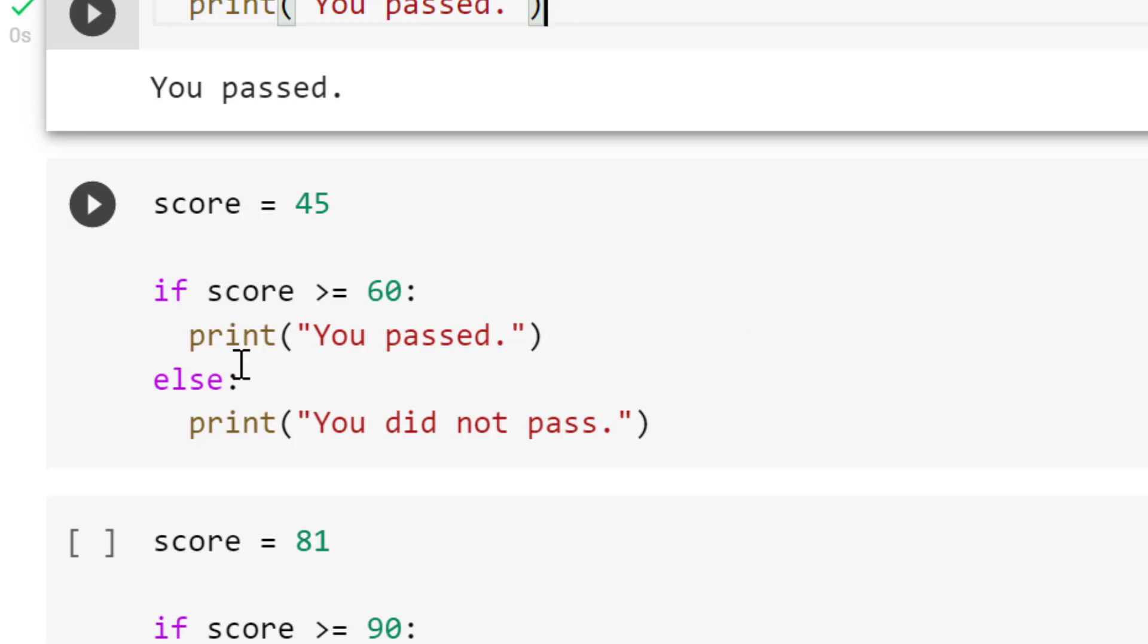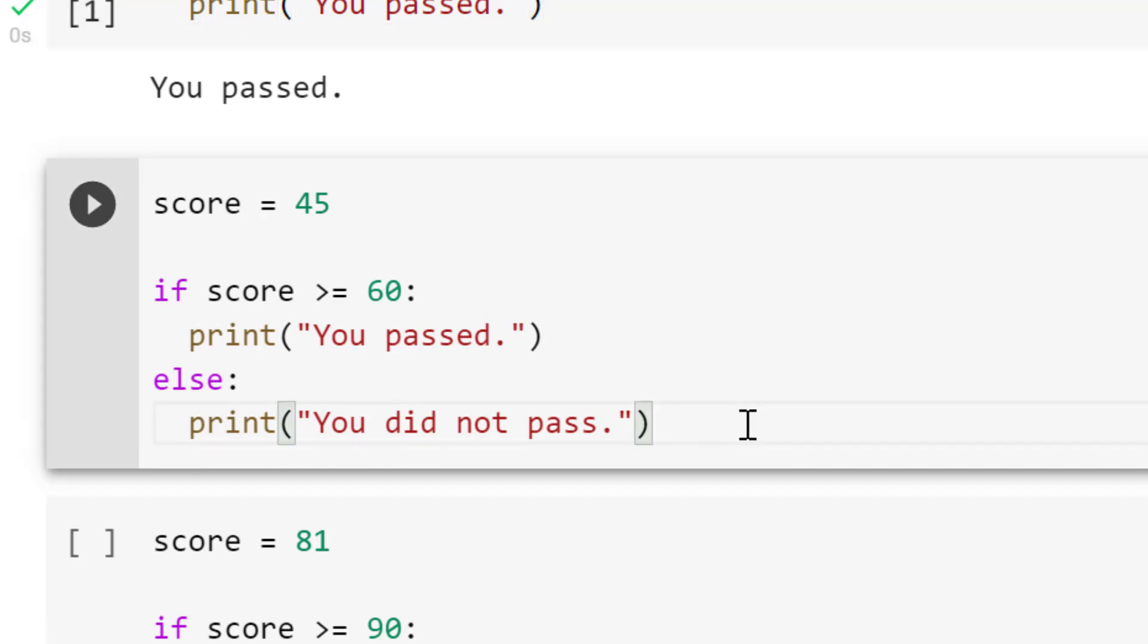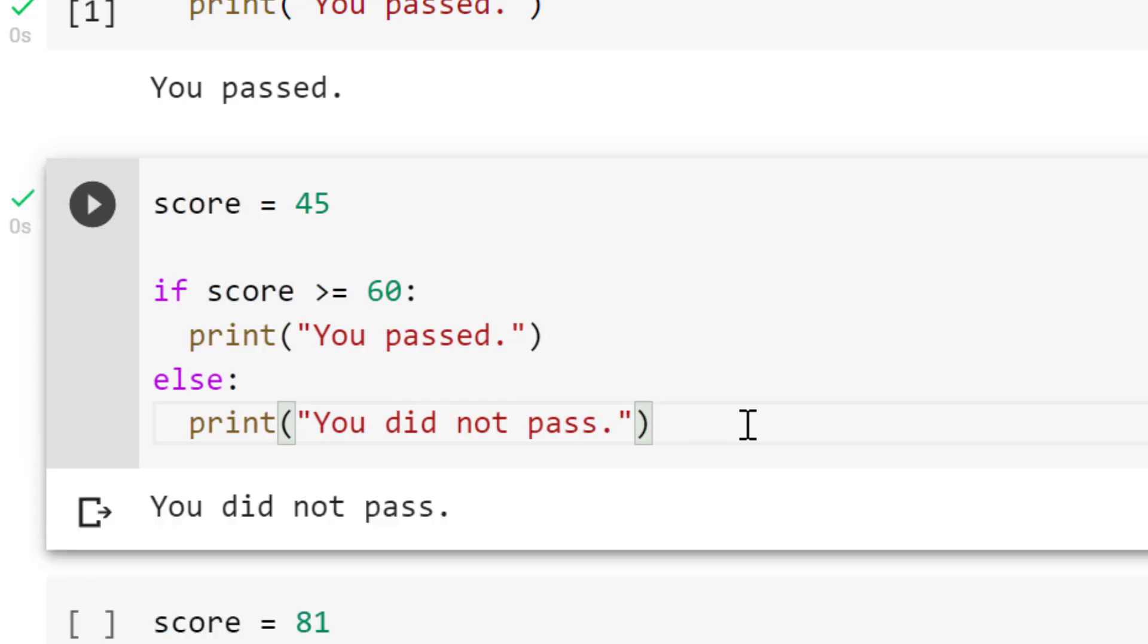So else, and again, that's got a colon after it, print you did not pass. Also notice in the syntax, we've got indentations after the if and after the else lines. So I'm going to go ahead and run this, and I would expect that it's going to print you did not pass because my score was less than what was in that condition. So I control enter, run this, and yeah, it says you did not pass.